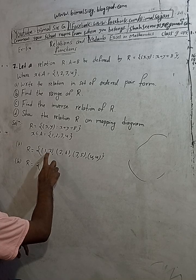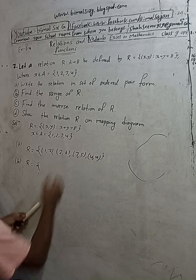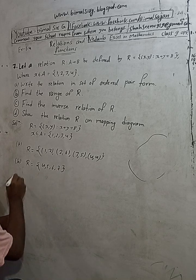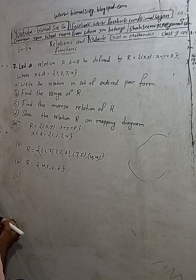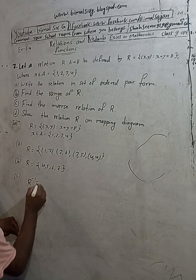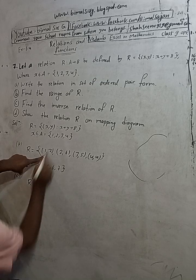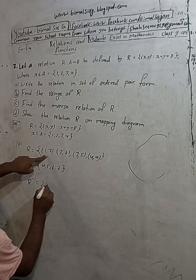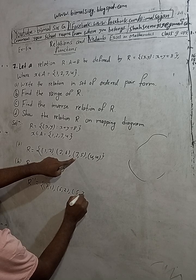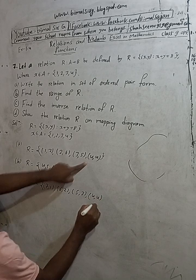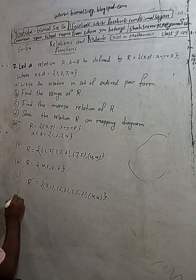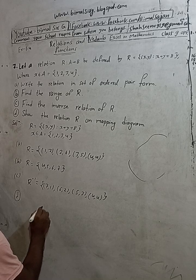So R equals {(1,7), (2,6), (3,5), (4,4)}. For part C, find the inverse relation of R. R inverse is obtained by interchanging the pairs: {(7,1), (6,2), (5,3), (4,4)}.